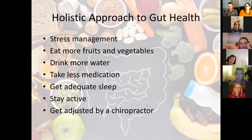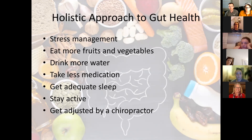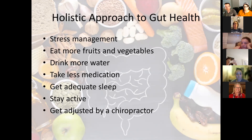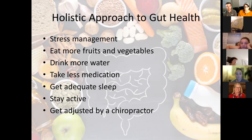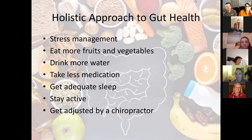Our holistic approach involves managing stress better, eating more fruits and vegetables to naturally combat inflammation, drinking more water, taking less medication if possible, getting adequate sleep, staying active, and getting adjusted by your chiropractor. In my practice, I recommend patients start with a foundation of nutrition — something called Juice Plus, which is a great way to combat the chemical stress on our bodies associated with inflammation by using nutrients from the foods we eat. Let me turn this over to my wife, Melody, who's going to talk to you more about Juice Plus.